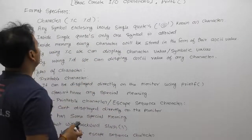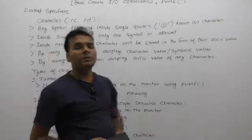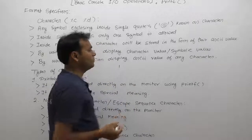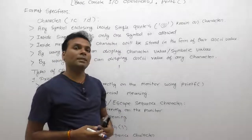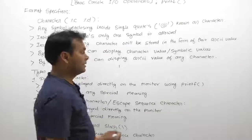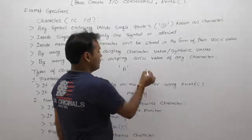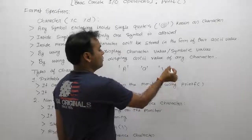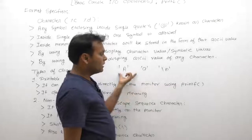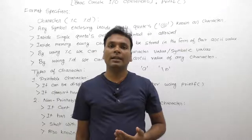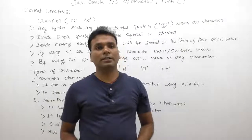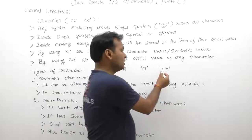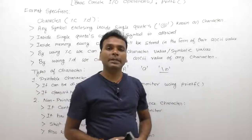Inside single quotes, only one character is allowed. However, some characters may be part of a combination of two symbols, so sometimes we can supply two characters inside single quotes. Maximum two symbols are allowed inside single quotes. Generally we use only single characters, but sometimes two symbols are used — this does not mean two separate characters; it is still a single character. We will discuss this in detail during escape sequence characters.